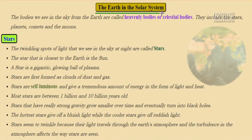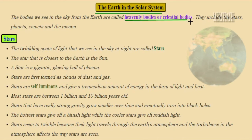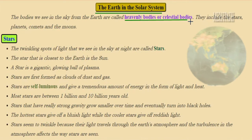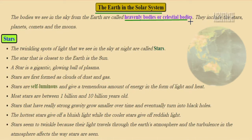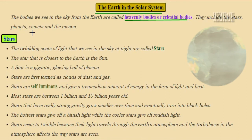Sometimes if we observe the night sky, we see some objects in the sky. They will be twinkling, shining, or just bright objects. These objects are known as heavenly bodies or celestial bodies, and examples of such objects are stars, planets, comets, and moons.